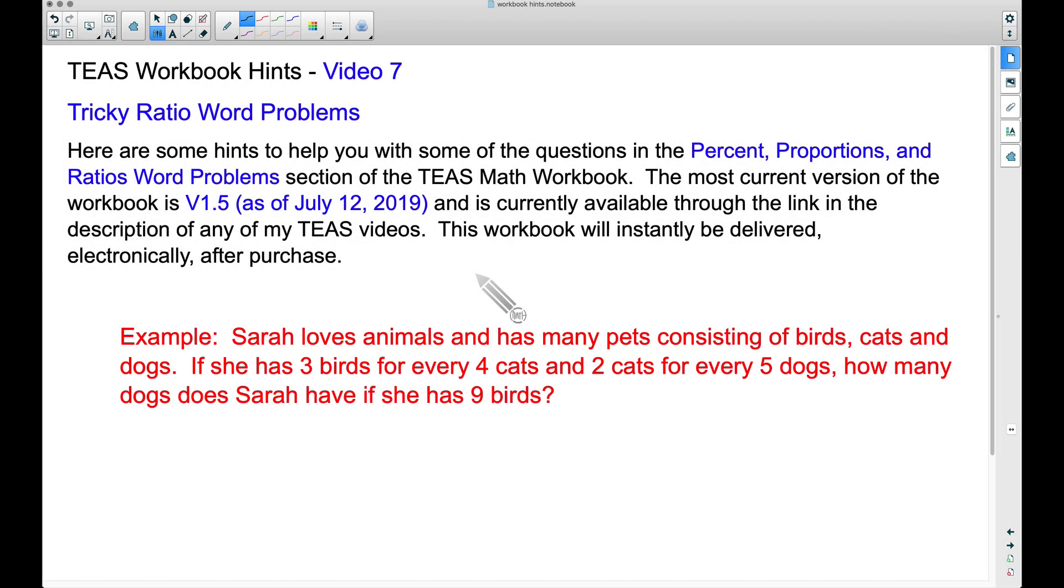All right, in this video, this is TEAS Workbook Hints Video number 7, and this is going to be a tricky ratio word problem. In a recent update, version 1.5, I did add an additional ratio word problem, and this example here will help you with that particular problem. However, that particular problem is dealing with plants; here we're talking about animals. The math works the same though.